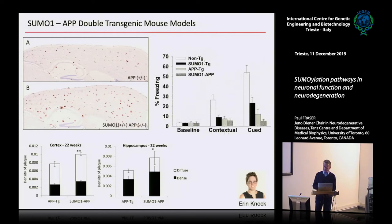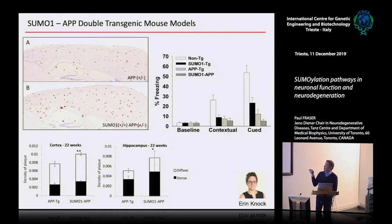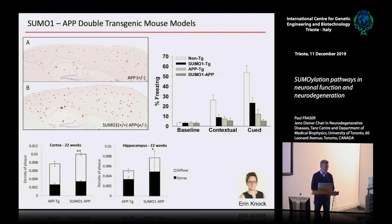This is also seen in cognitive impairments — contextually, SUMO1 shows some impairments already due to dendritic spine loss and synaptic transmission problems. It gets progressively worse overlaying SUMO1 and APP. In the cued test, which is mostly amygdala-driven, the SUMO1 mice are much more spared even though they've lost neural development. But when you add amyloid pathology in the amygdala, overlaying pathology with the SUMO1 protein just makes it significantly worse.